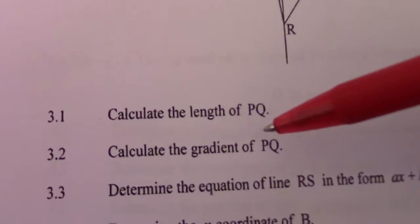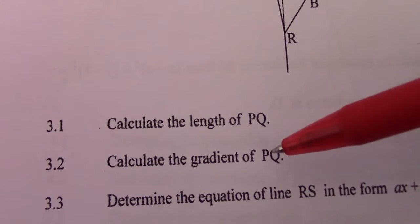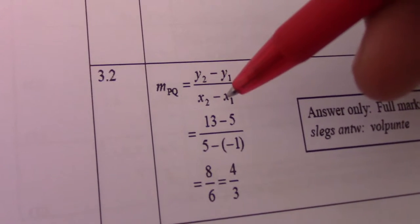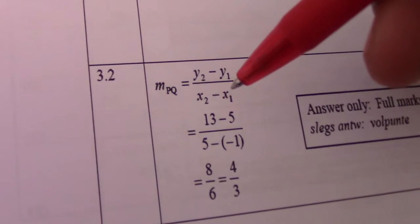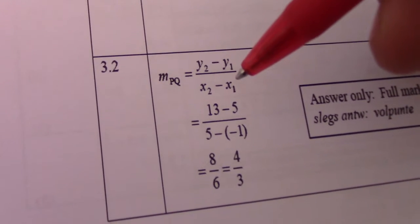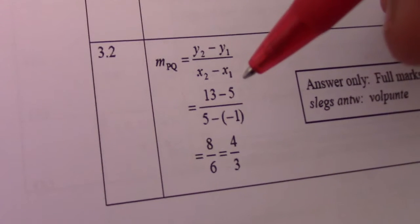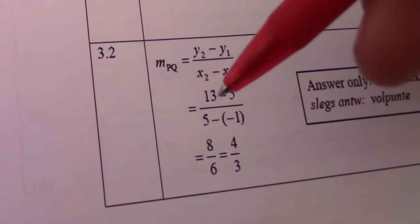Next question: Calculate the gradient of PQ. So now we want gradient PQ. Gradient equals (y₂-y₁)/(x₂-x₁). P is (5,13) and Q is (-1,5). Oh wait, Q is at 5 and -1.